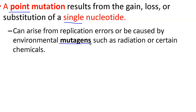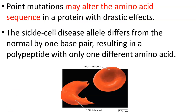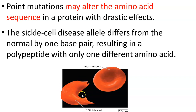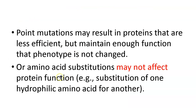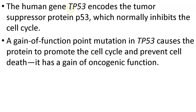Point mutations may alter the amino acid sequence — one single nucleotide change and we can alter the amino acid sequence. The perfect example of this is sickle cell: one place it differs, and it leads to that change in amino acid sequence, which causes hemoglobin in red blood cells to collapse under low oxygen conditions, leading to a lot of problems. Point mutations may also result in proteins that are less efficient but maintain enough function that phenotype is not changed. Amino acid substitutions may not affect protein function at all — that is a silent mutation. For example, the human gene TP53 encodes P53: a gain of function mutation causes the protein to promote the cell cycle and prevent cell death, giving it an oncogenic function — the beginning of cancer.